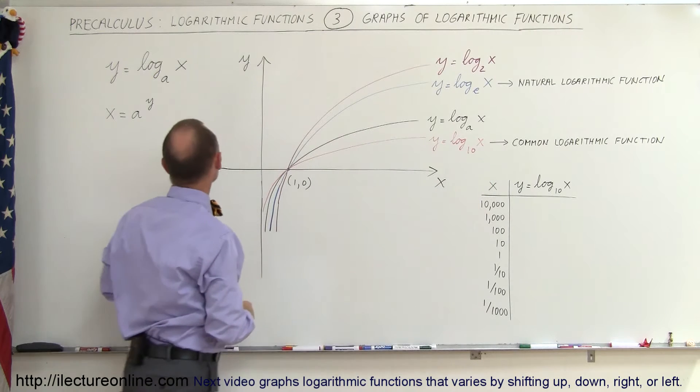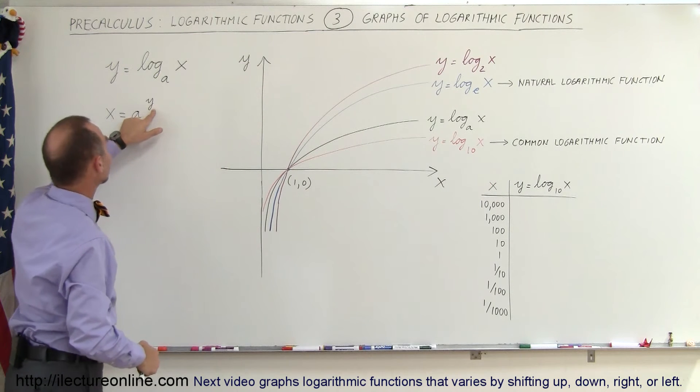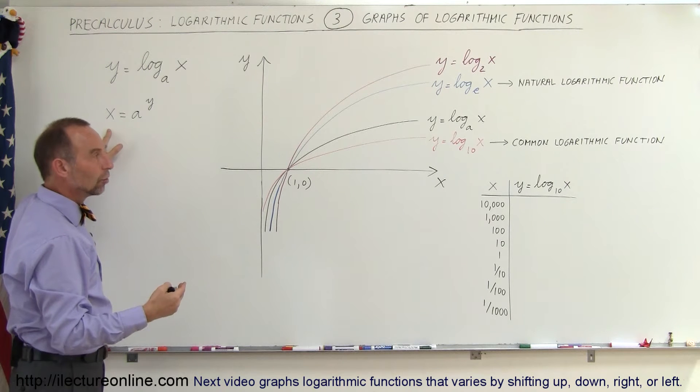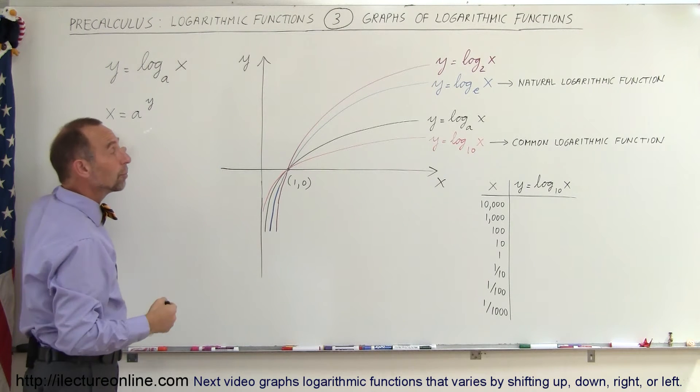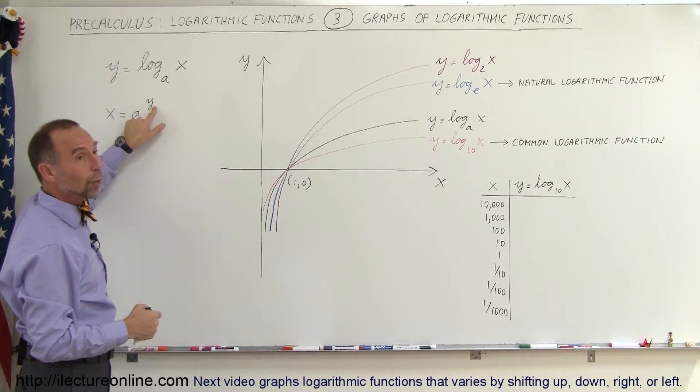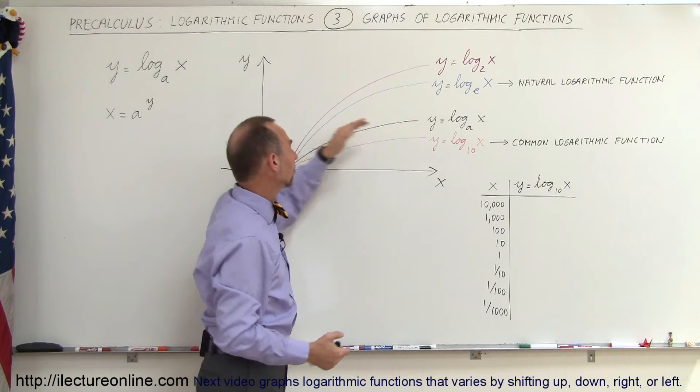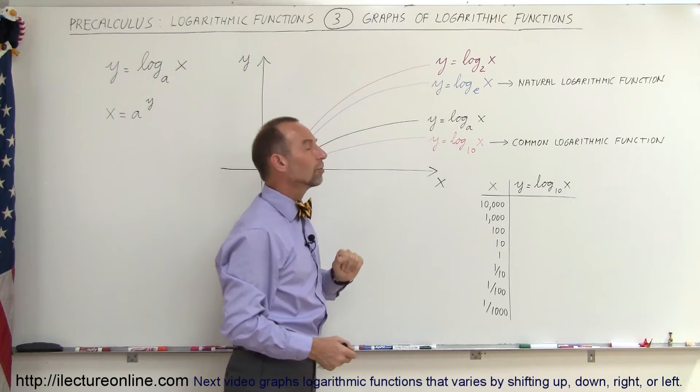The reason for that is, you're looking for an exponent that when you take the base raised to the exponent, you get the value of x. So, x can be a very large number for a very small value for y when the base is a large number. And that's why the slope is like this for a large base and like this for a small base.